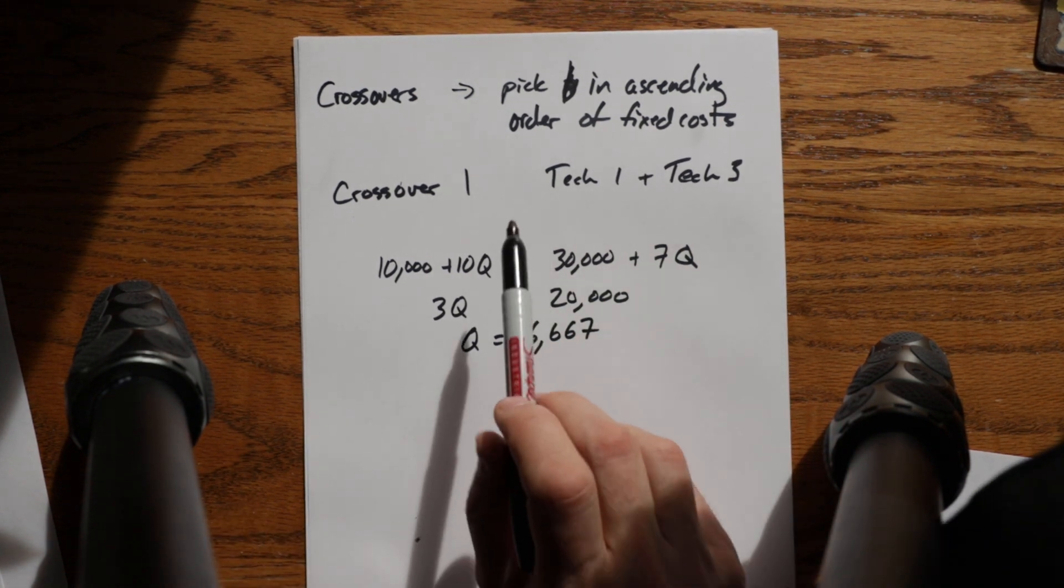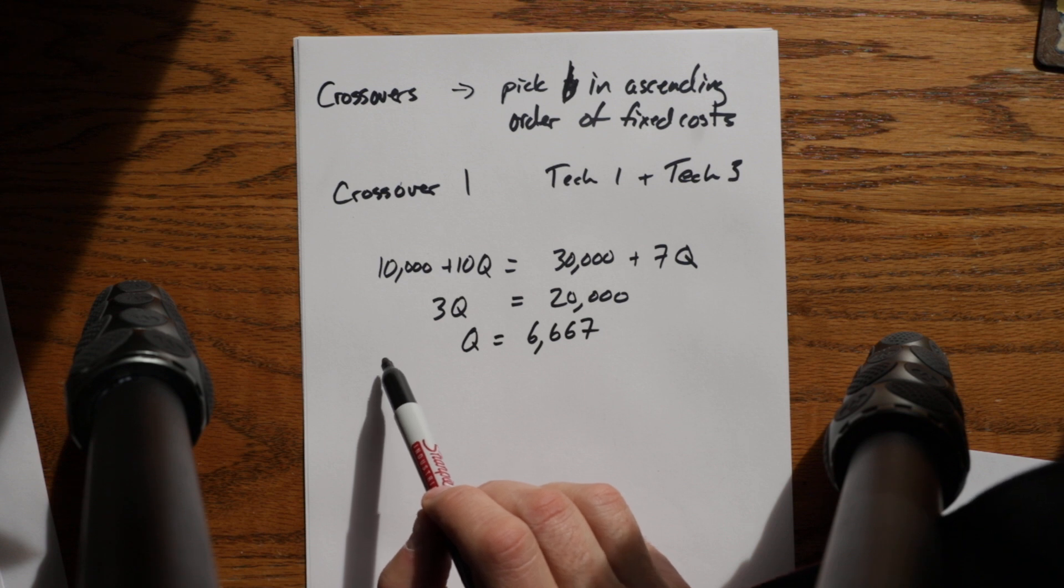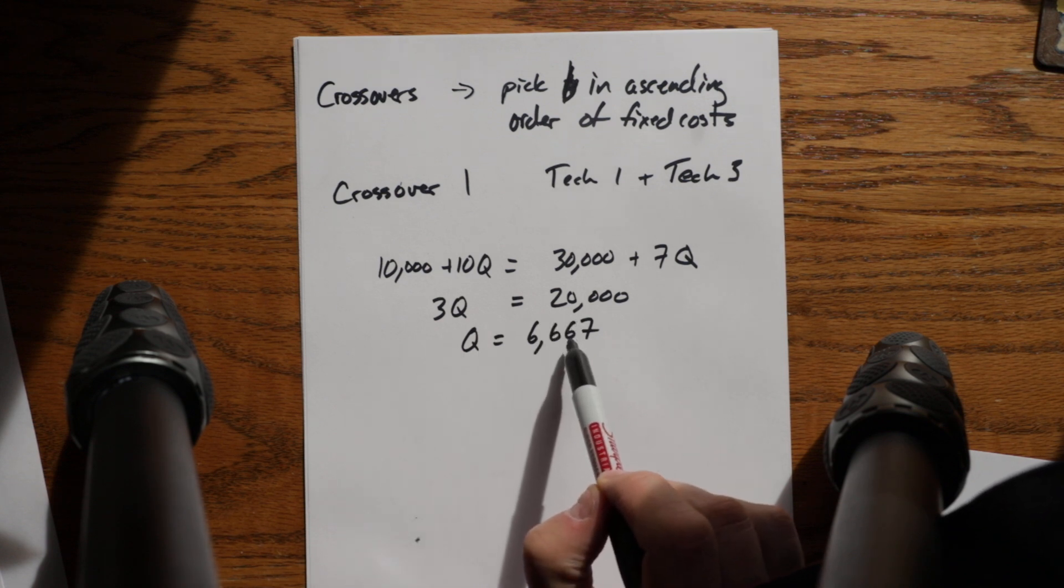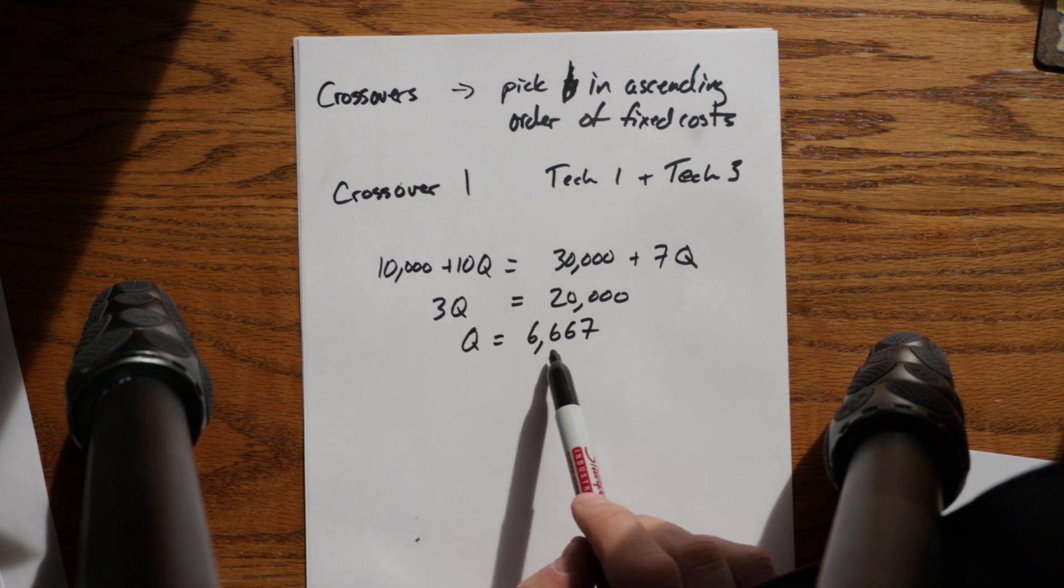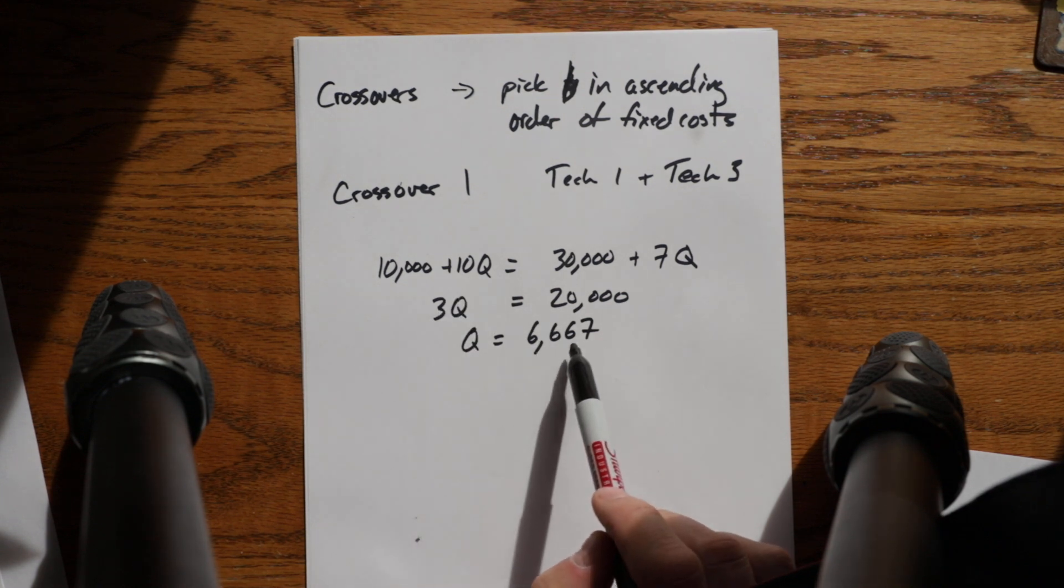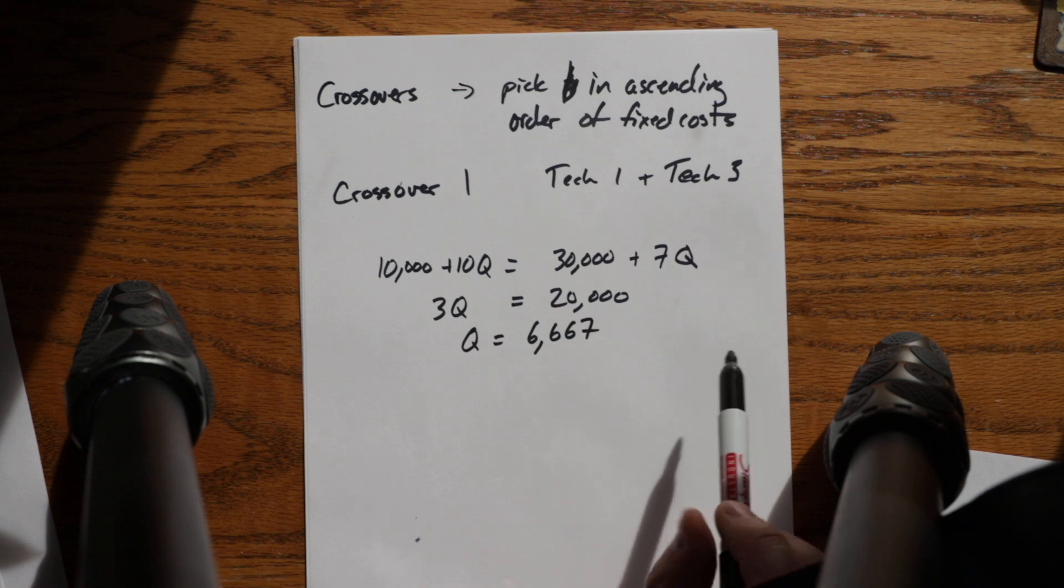That means from zero to 6,667, technology one is cheaper. And then beyond 6,667, technology three is cheaper.